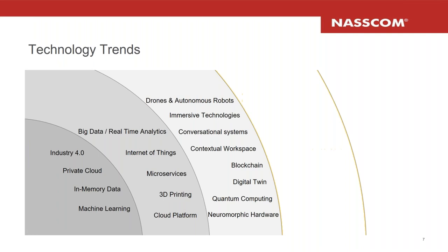Neuromorphic hardware is another one, which mimics how neurons work — how our human brains work. The current ML, AI, deep learning technology requires a lot of data to test the models. But researchers are trying to make it even smarter and think like the human brain does. That's the set of things being worked out in neuromorphic hardware.